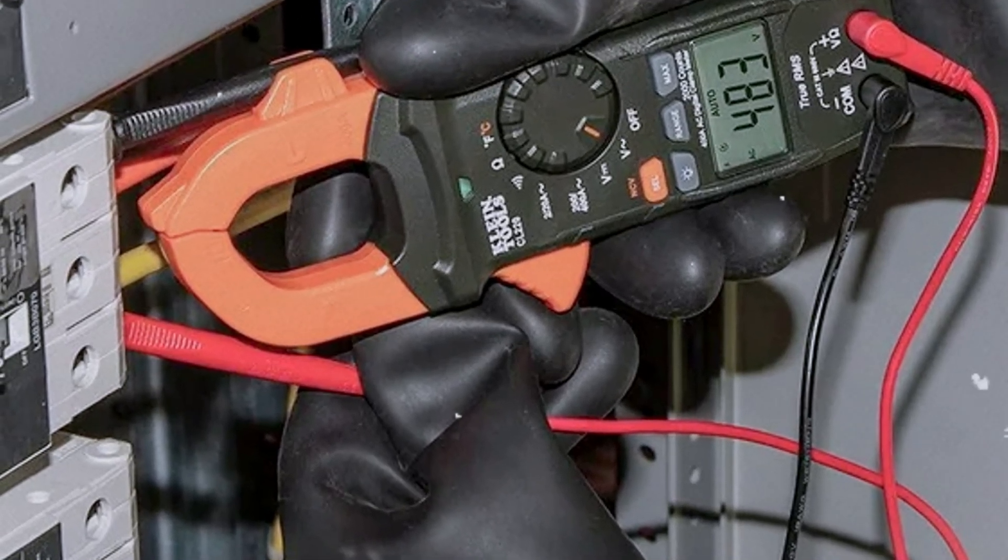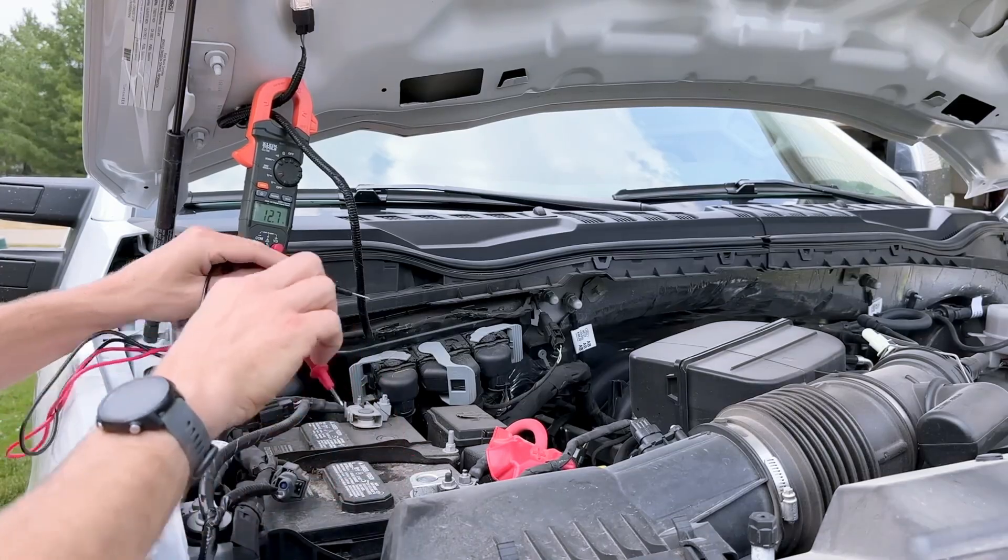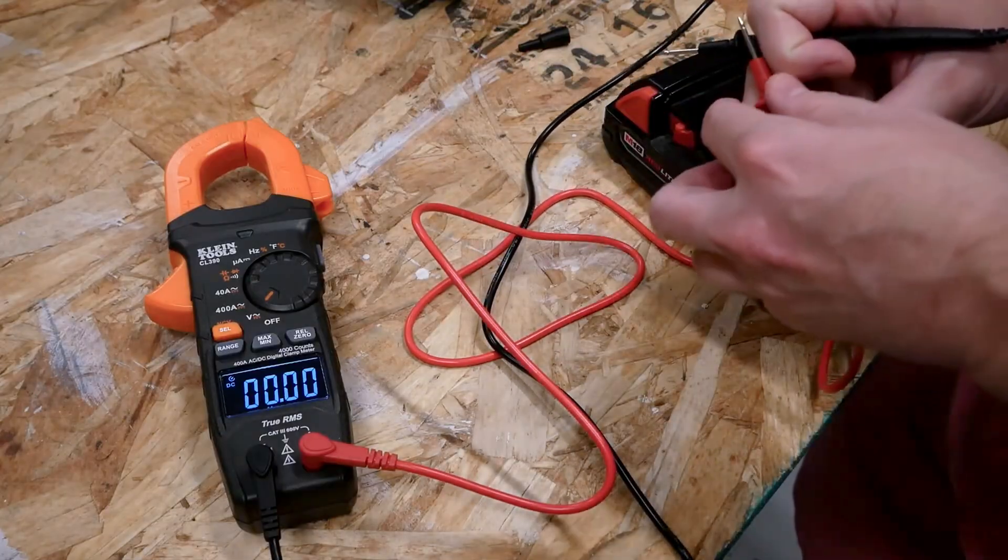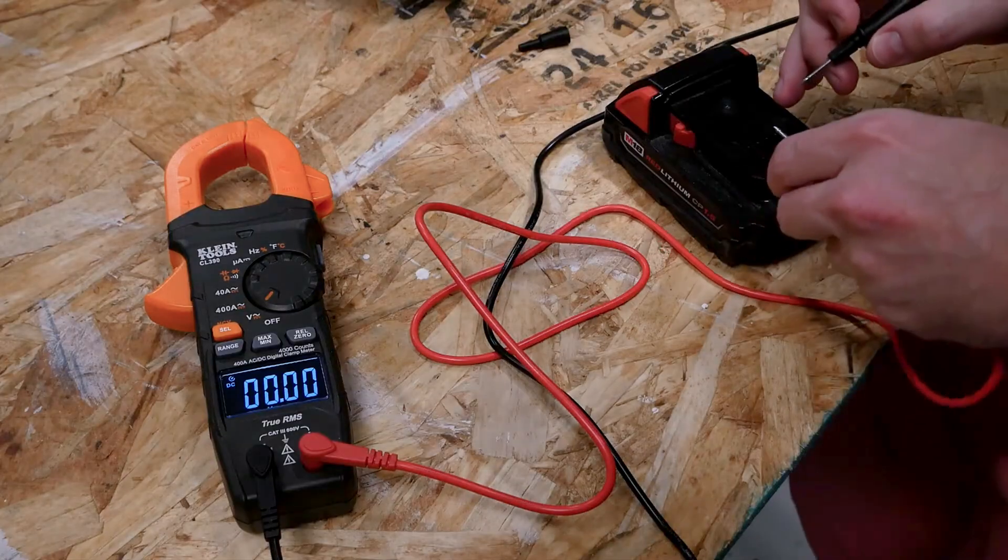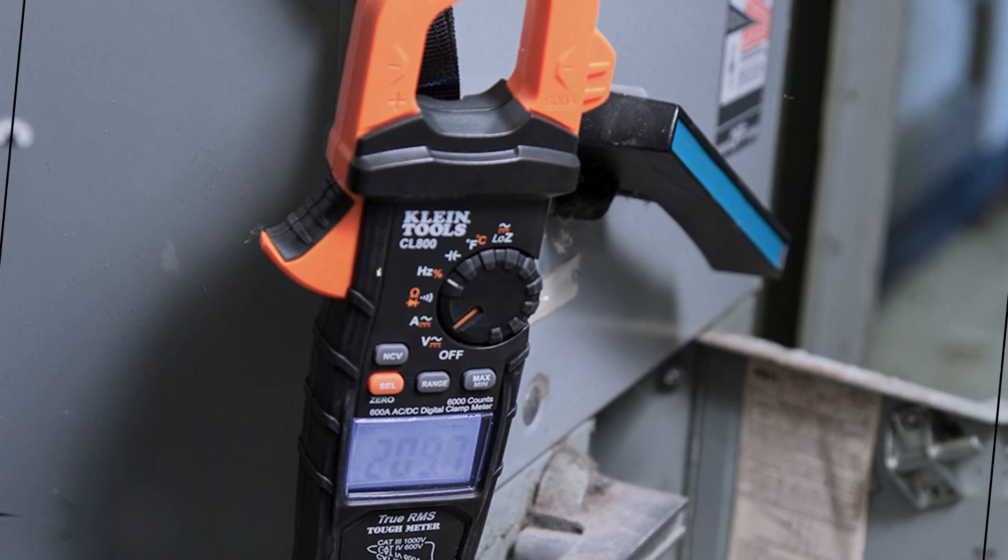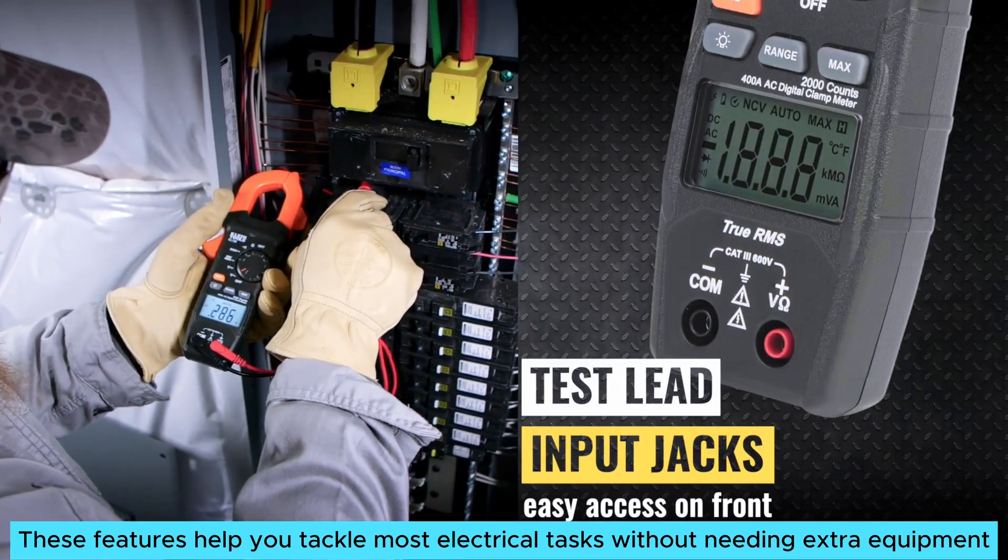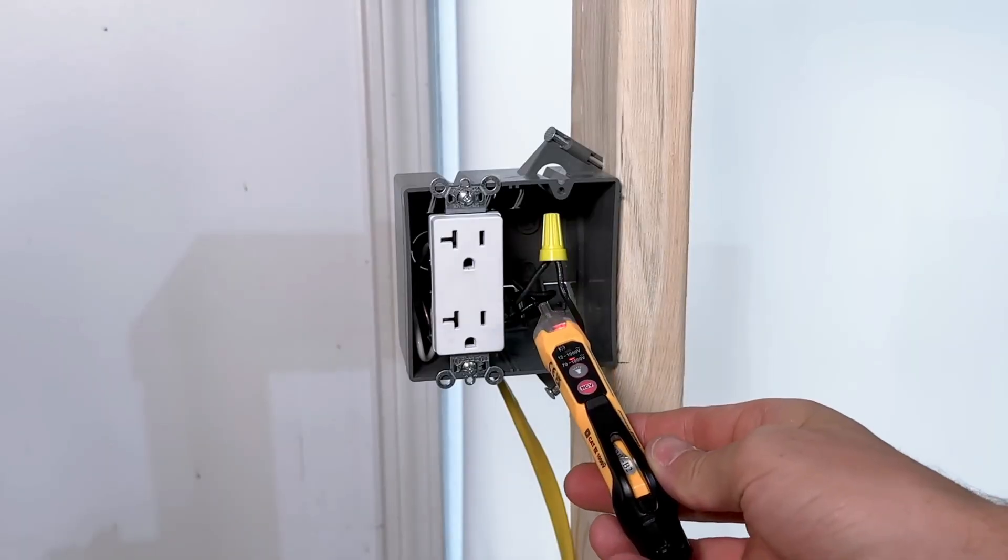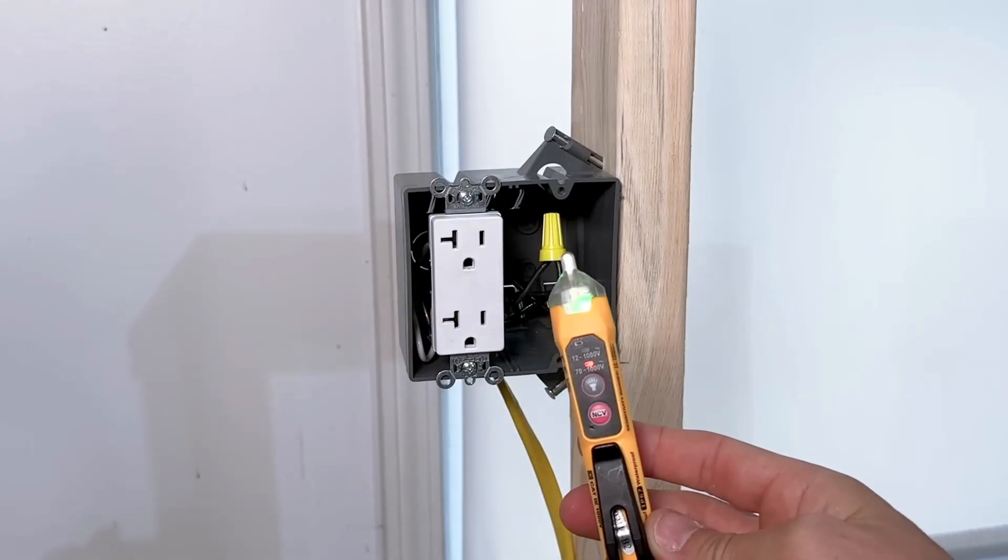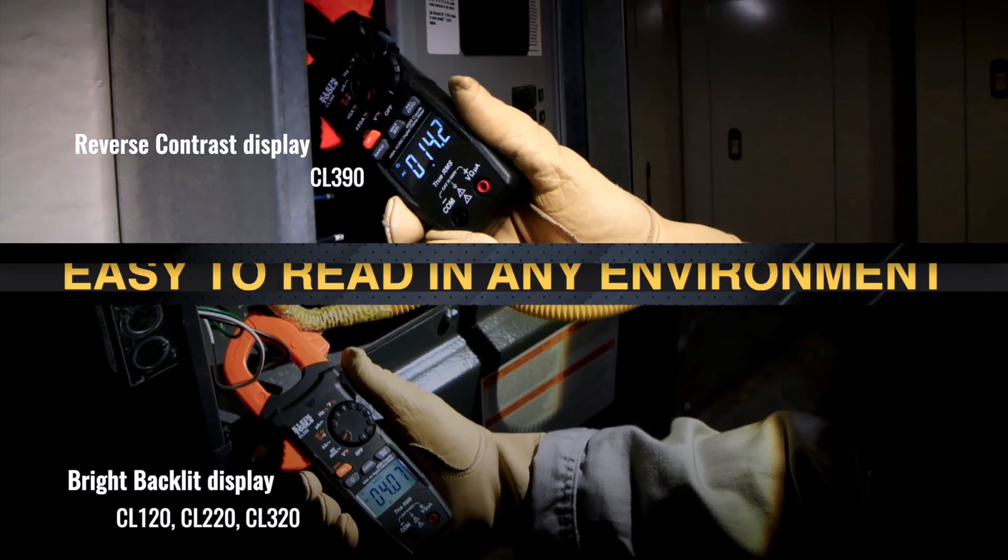Whether you're testing a wall socket or an appliance, a jaw-mounted non-contact tester also enhances convenience. You can quickly check voltage without direct contact, saving time and hassle. Klein Tools include standard testing leads for various applications, including amperage and resistance. These features help you tackle most electrical tasks without needing extra equipment. A K-type thermocouple makes temperature measurements straightforward, too. Swift readings help you diagnose issues on the spot.